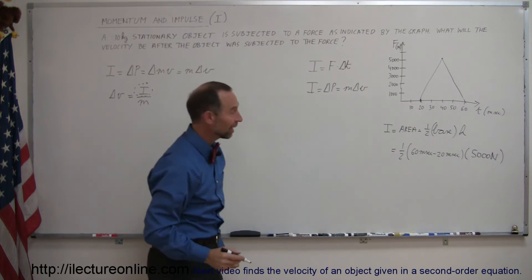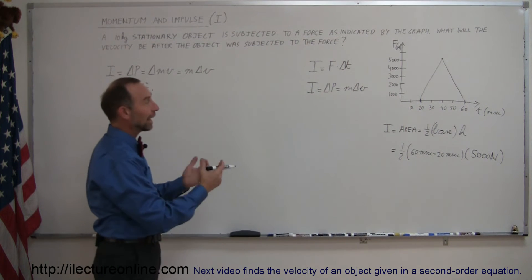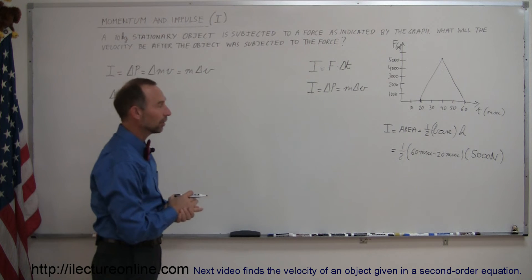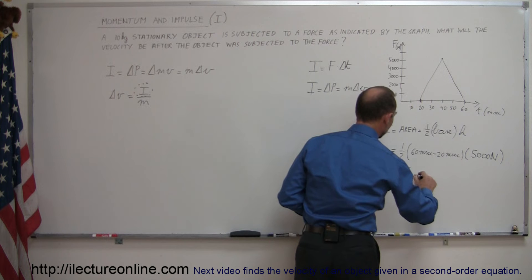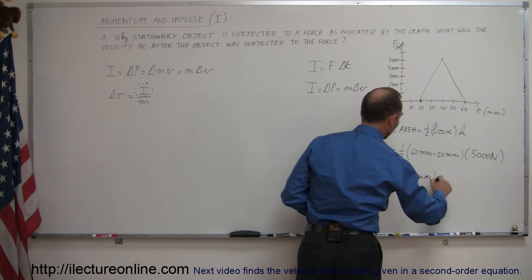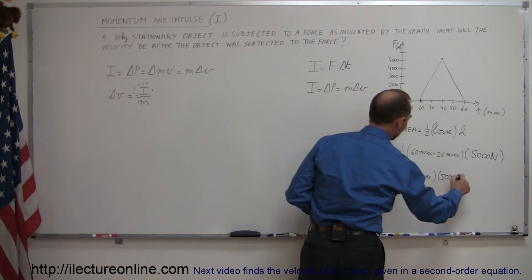So here this represents the impulse in the form of the area of that triangle and so this is equal to one half times 20 milliseconds times 5000 newtons.